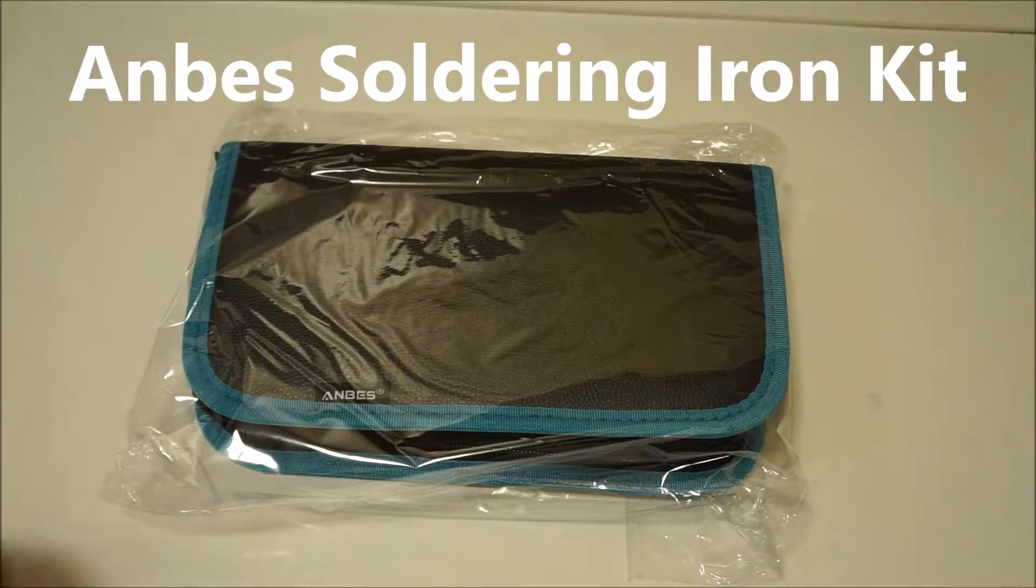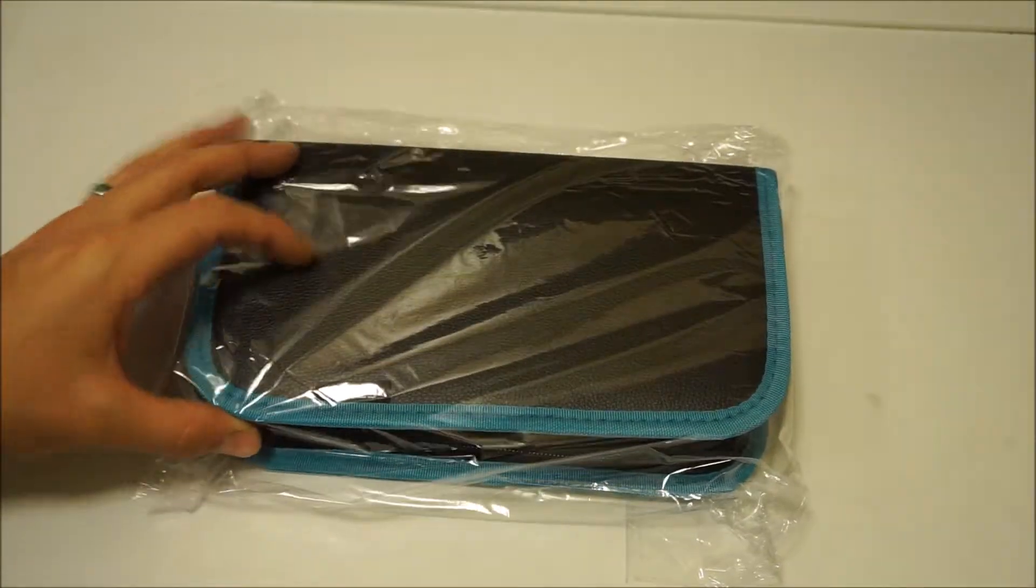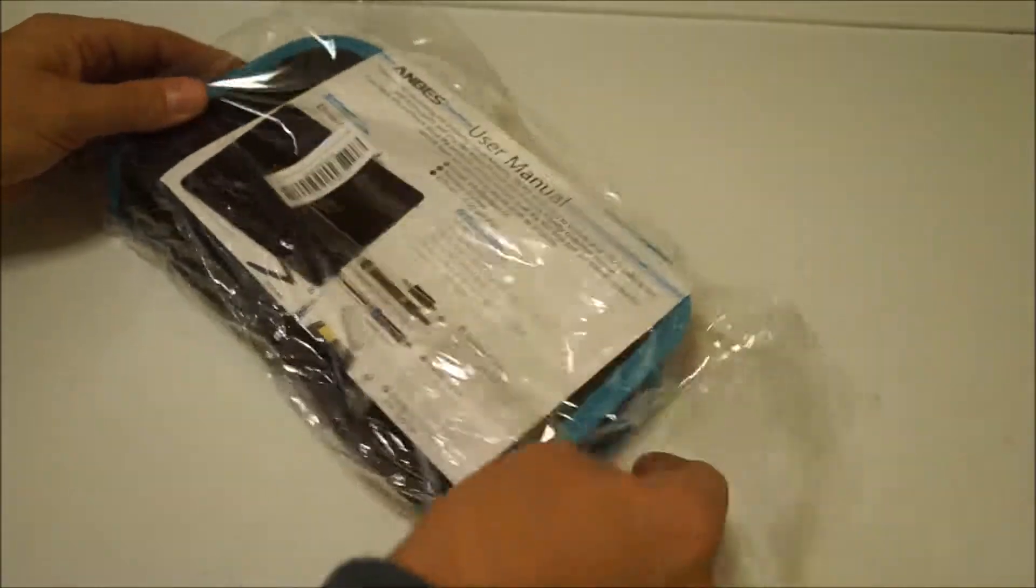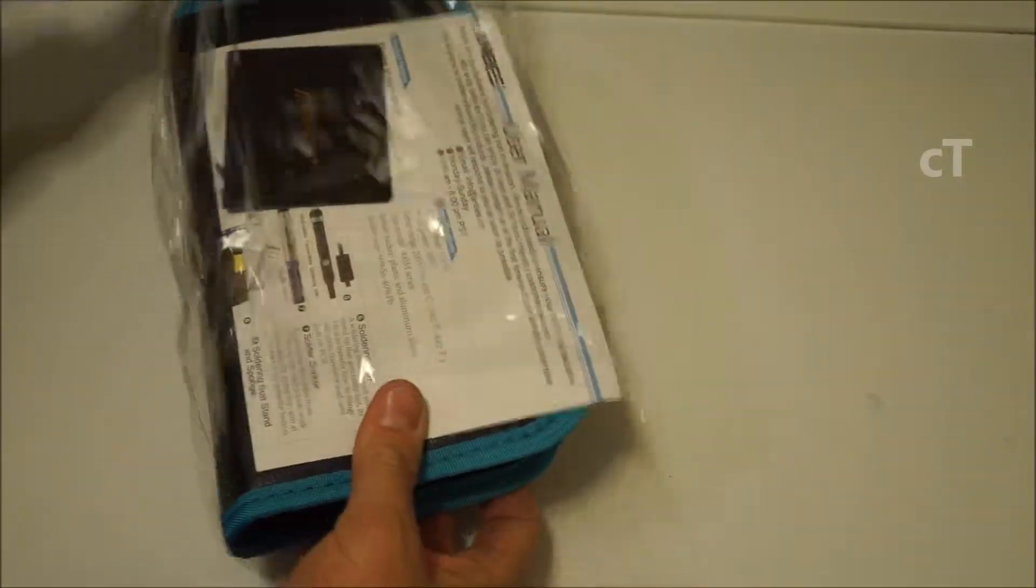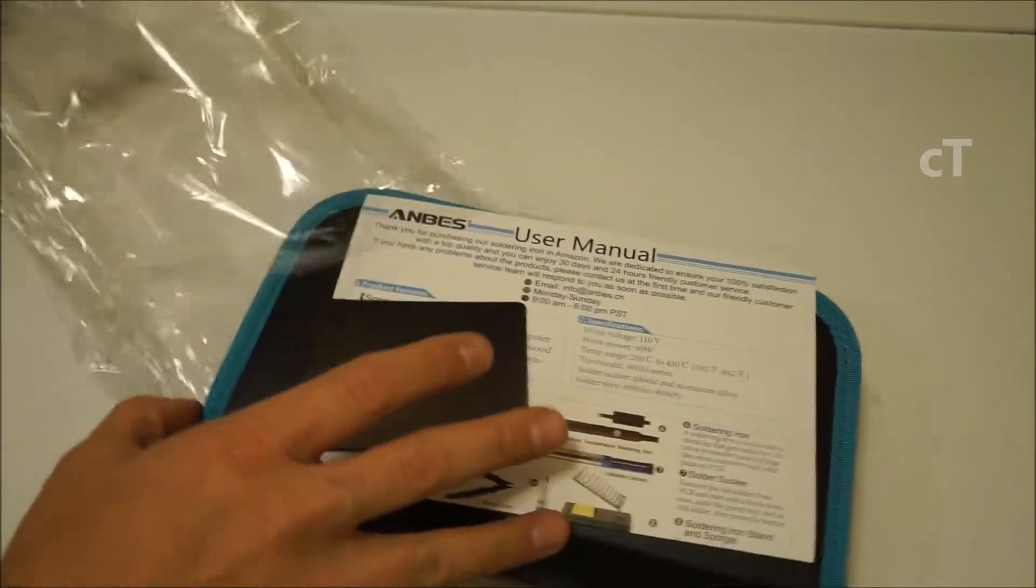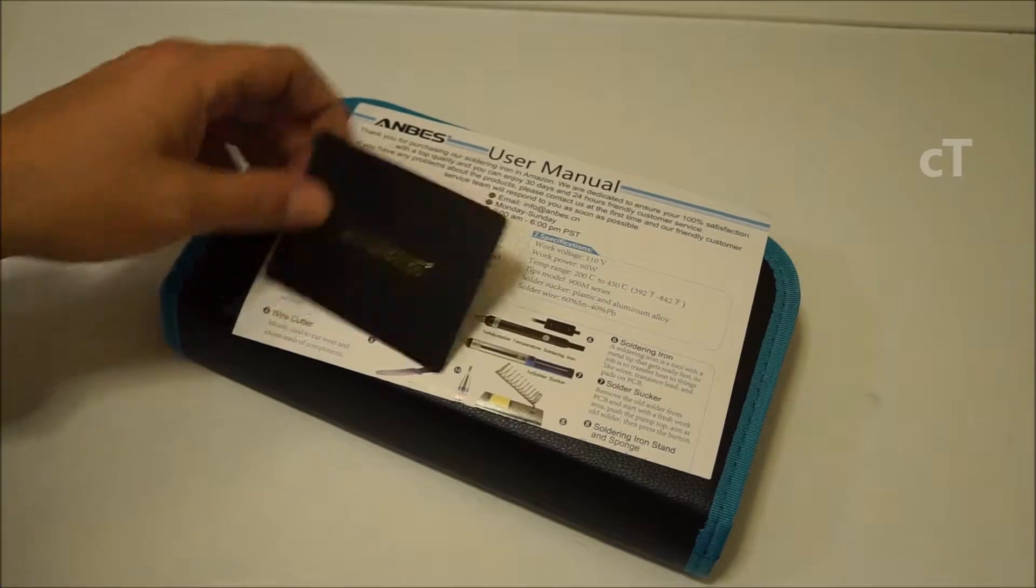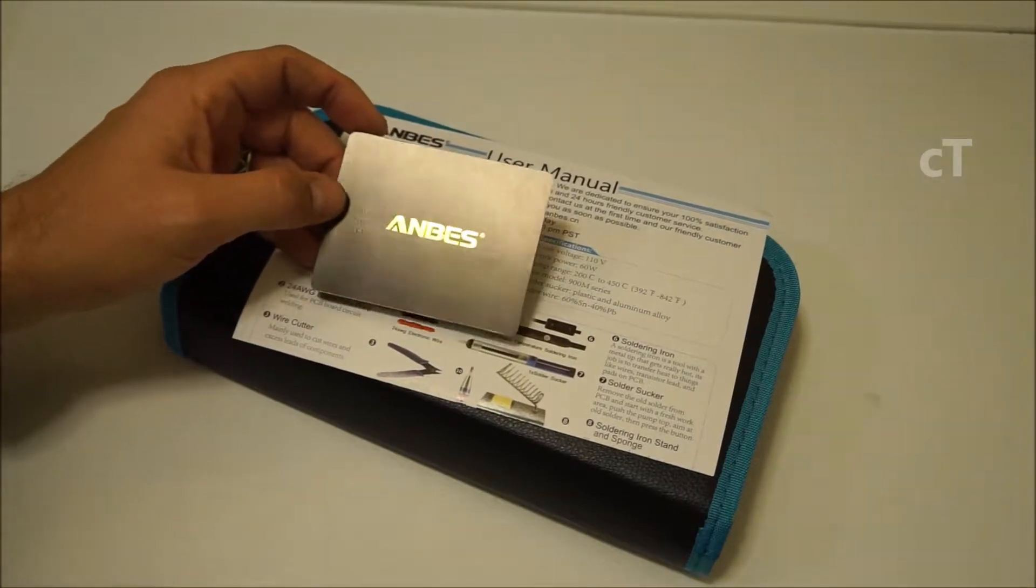I got this $15 soldering iron kit on Amazon. This is the Anbis, kind of the cheapest one. There's a few that are under $20. This one is $15 at the time that I purchased it.